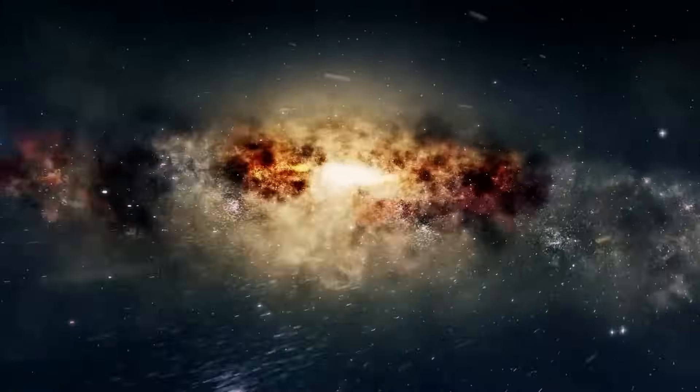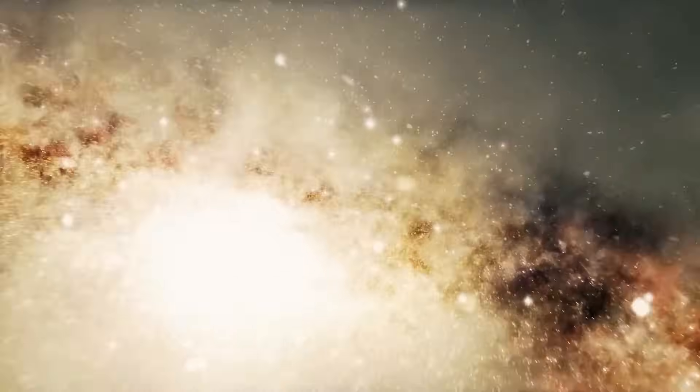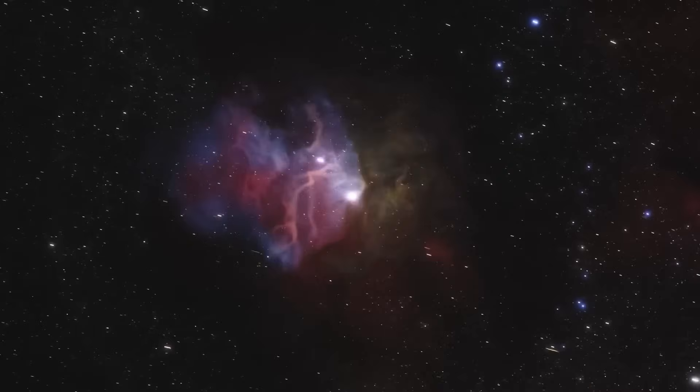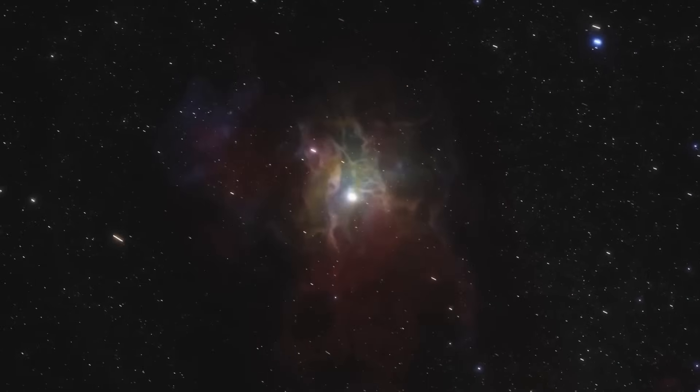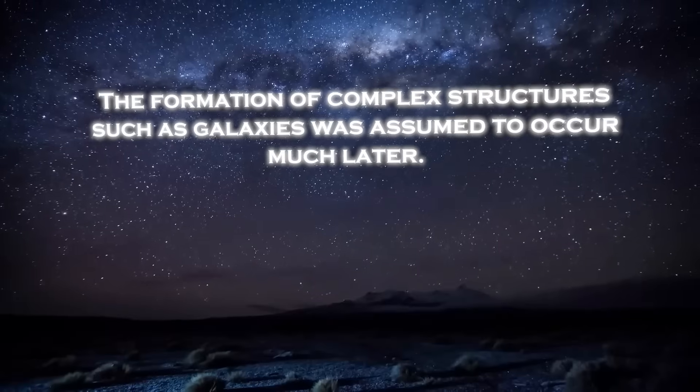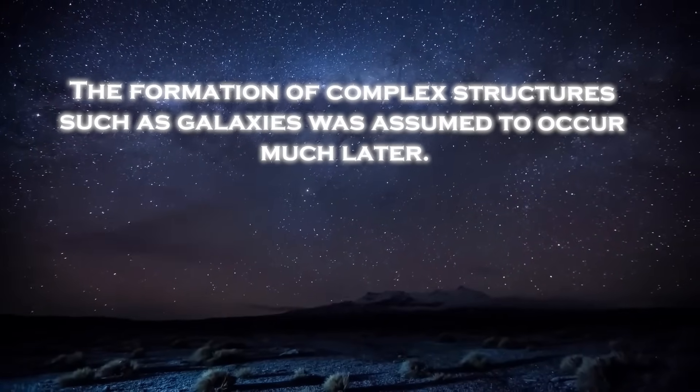Something doesn't fit here anymore. The Big Bang theory tells us that the cosmos was a hot mess after the initial event. The first solid objects took hundreds of thousands of years to form and it took hundreds of millions of additional years for the objects to reach sufficient density and produce light. The formation of complex structures, such as galaxies, was assumed to occur much later.